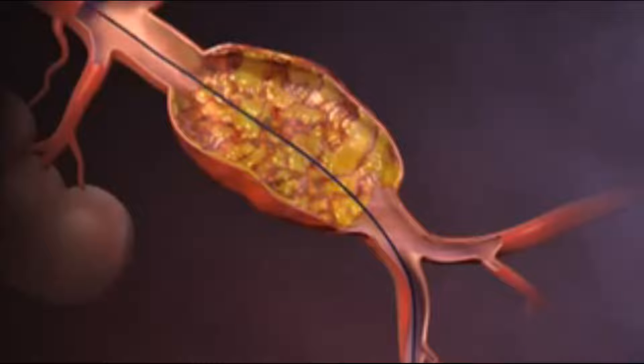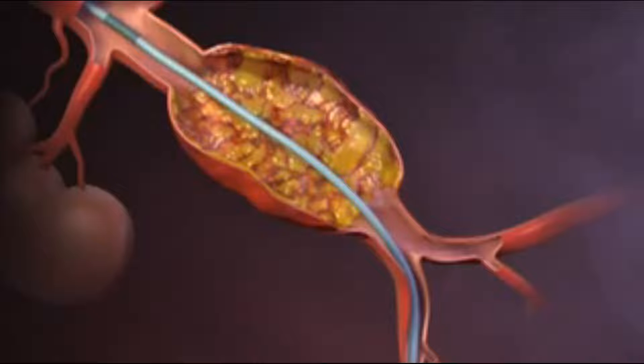a guide wire is introduced into the abdominal aorta through a femoral artery. This is followed by the sheathed main body of the stent graft, which is positioned with the use of fluoroscopy.